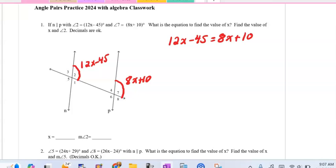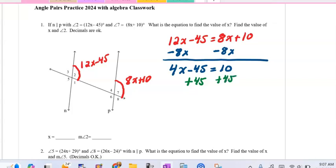The first step would be to combine like terms. There are no like terms on the left side nor the right side. So the second step is I'm going to subtract 8x from both sides. I'll get 4x minus 45 is equal to 10. Then I'm going to add 45 to both sides, and we'll get 4x is equal to 55.